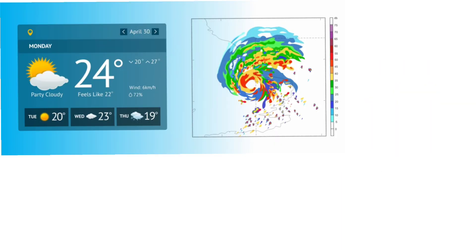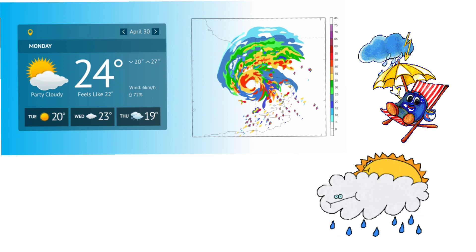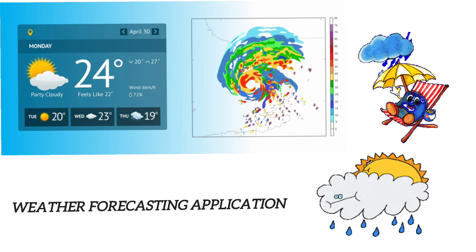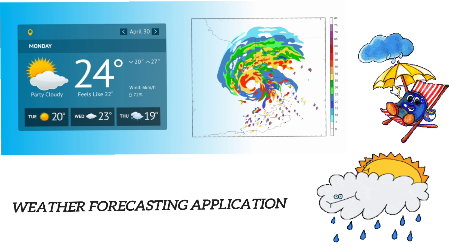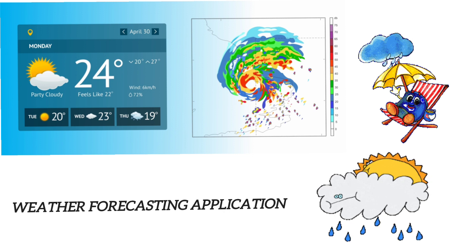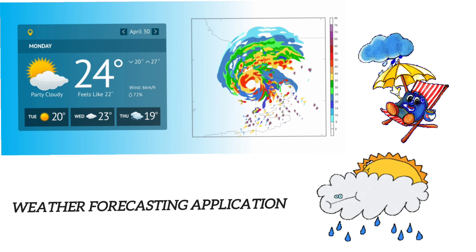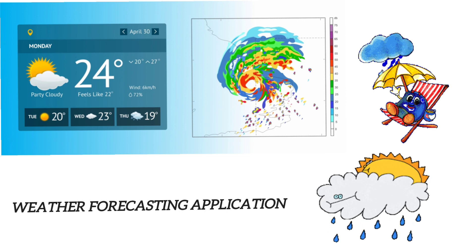6. Weather Forecasting Application. Developing a weather forecasting application can be both educational and practical. Students can use APIs to fetch real-time weather data and display it to users in an intuitive interface. This project can involve data visualization and location-based services.